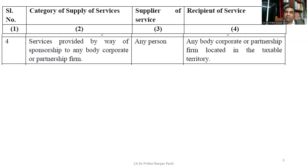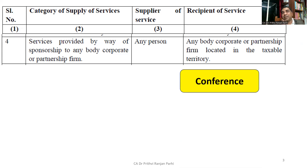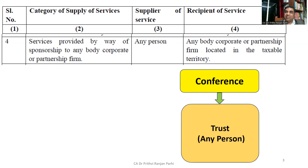Only these two types of recipients are covered here. The supplier of the service can be any person — column number three says supplier of the service can be any person — but the recipient has to be a body corporate or partnership firm if you want GST to be paid under RCM. Now let me try to explain with the help of a picture. Let us assume there is some conference or some kind of program being conducted — it may be conducted by a company, a trust, an association, or a society.